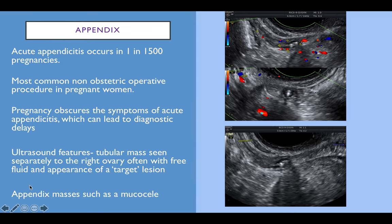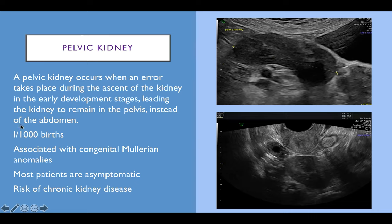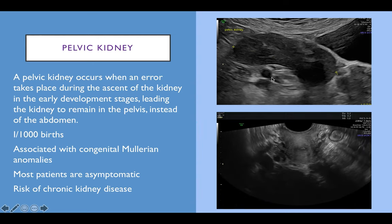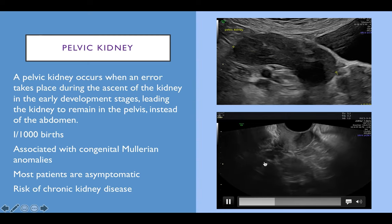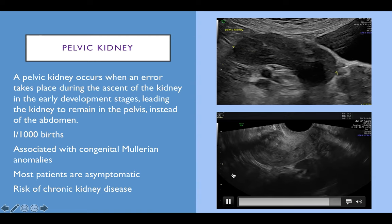Mucoceles of the appendix are rare but can be picked up on scan. Pelvic kidneys are always a surprise — sometimes patients know about it, sometimes they don't. They occur in 1 in 1,000 births and are associated with other congenital anomalies. An error during the ascent of the kidney in early developmental stages causes the kidney to remain in the pelvis. Most patients are asymptomatic though there is a risk of chronic kidney disease. On this transabdominal scan we can see the posterior of the cervix, the ovary, and then the kidney just adjacent — moving separately to the ovary and uterus, looking like a kidney but just in the wrong place.